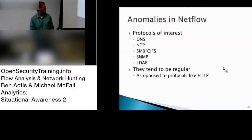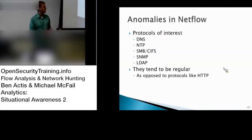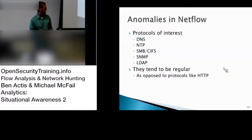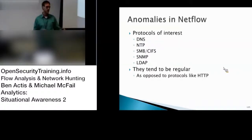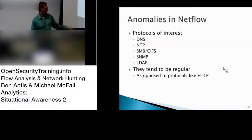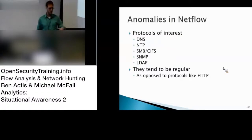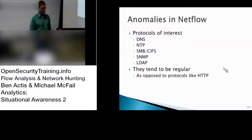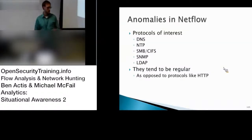However, there are some protocols where anomaly detection is more operationally useful — things like DNS, NTP (network time protocol), SMB (server message block / Windows file sharing), and LDAP. These protocols are all relatively regular and well-constrained, with single defined purposes. DNS typically involves a one-packet request and a one-packet reply, so a large amount of data going over DNS is unusual. As opposed to something like HTTP, which is a very wild protocol — a lot of different things ride over it, and trying to detect anomalies there is basically impossible statistically.